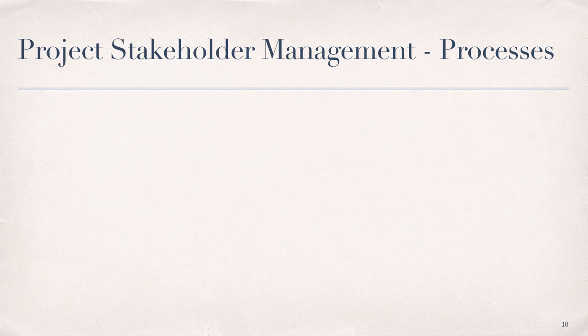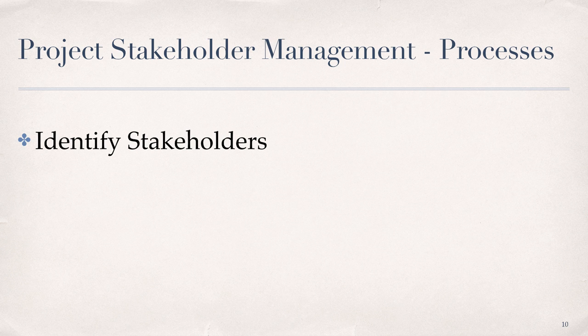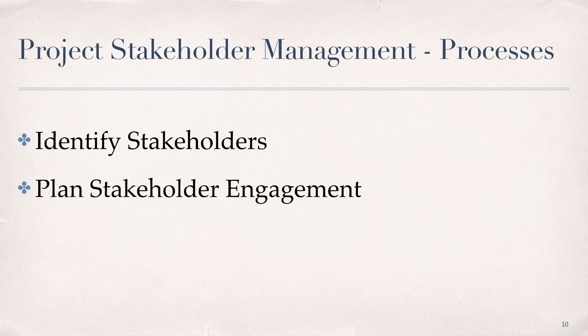The first project stakeholder management process is identify stakeholders. The process of identifying stakeholders begins with the project charter and aligns with the initiating process group in the PMBOK. Project stakeholders provide important feedback on product increments to document relevant information related to their interests, involvement, influence, and impact on project success. The second process is plan stakeholder engagement, which assists with development of strategies to build stakeholder engagement based on their needs and to assist in meeting client expectations. This process directly supports development of the communications management plan and aligns with the planning process group in the PMBOK.